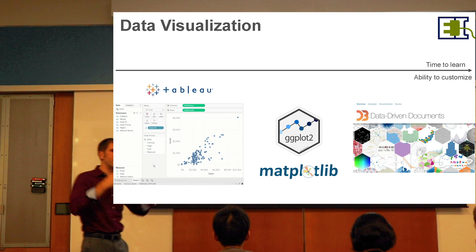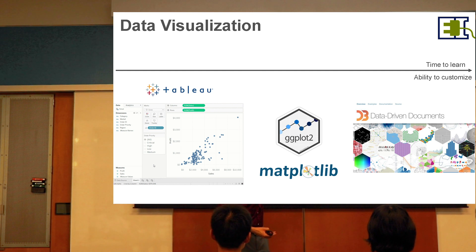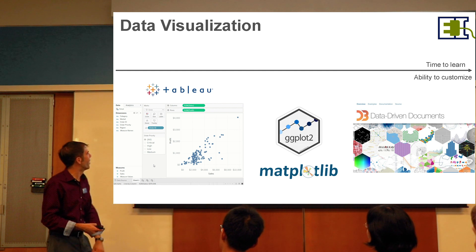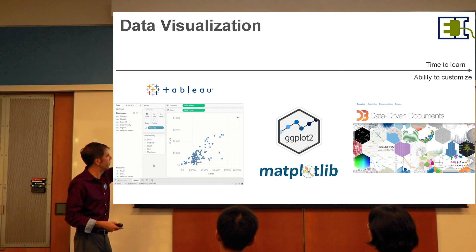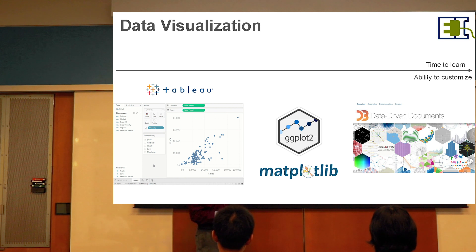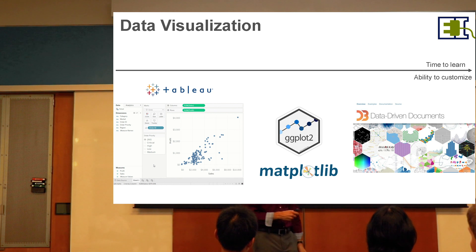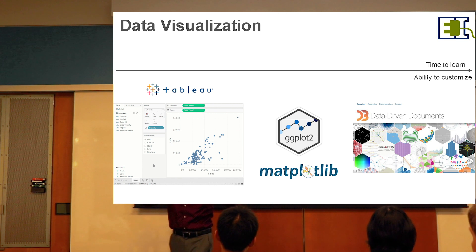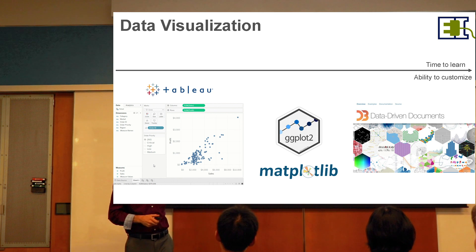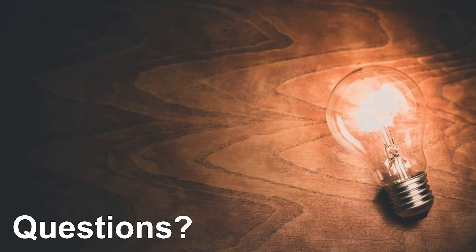For data visualization, there's a scale between time to learn and ability to customize — those usually go together. Tableau makes beautiful charts quickly with data loaded in. For more flexibility, ggplot2 for R and matplotlib for Python are great options. And if you're a hardcore visualizer, you can go to the full D3 — data-driven documents — JavaScript implementation and make incredible New York Times-worthy interactive visualizations. We'll wrap up there — any questions?